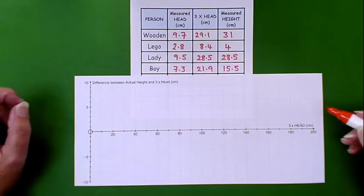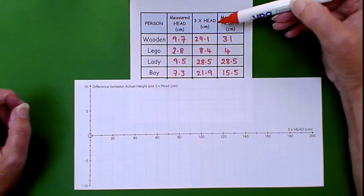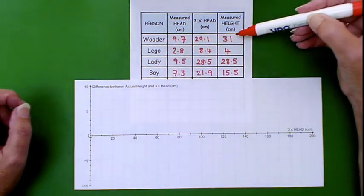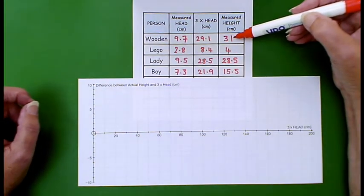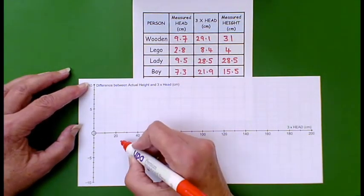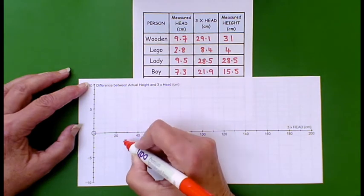Here is a different graph looking at the difference between three times around your head and the measured height. The wooden person is smaller by a difference of 1.9. The fact that it's smaller means that we're going to put a cross here.